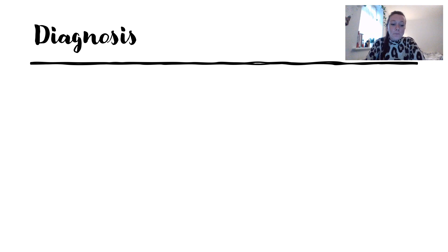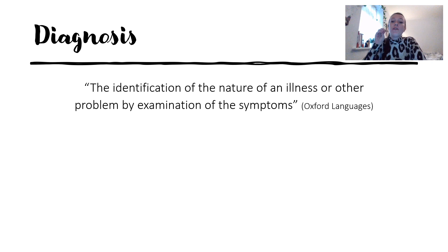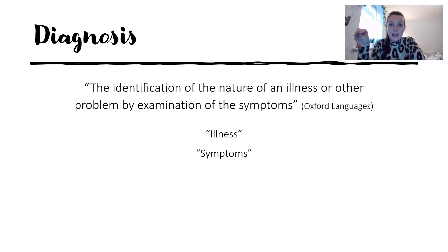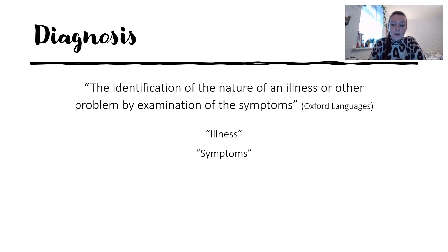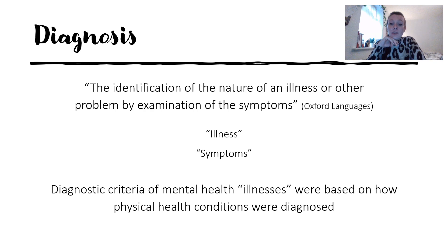Moving on to diagnosis itself. The Oxford Languages definition: 'the identification of the nature of an illness or other problem by examination of the symptoms.' Some language to pick up on here — 'illness' and 'symptoms.' Inherently in the definition of diagnosis, we've already got the idea that illness exists as a truth and that symptoms exist. What we're questioning is whether that's true or even helpful. Importantly, the diagnostic criteria for mental health conditions were actually based on how physical health conditions were diagnosed.